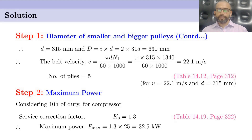In step 2, we find the maximum power. We consider heavy-duty service for the compressor; therefore, the service correction factor Ks is obtained as 1.3, from table 14.19 on page 322. Therefore, the maximum power Pmax equals 1.3 × 25 = 32.5 kW.